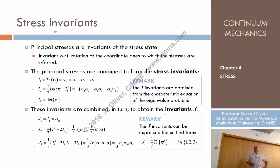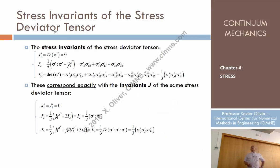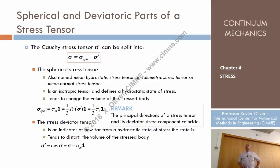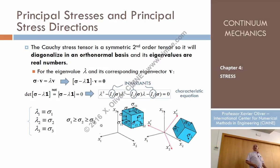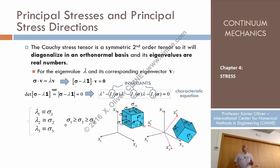Let me talk now a little bit about stress invariance. There should be some combinations of the stress components in different possible systems of coordinates, such that in spite of these components changing when we change the Cartesian system of coordinates, a certain combination should be constant regardless of the coordinate system. They are called invariants, and there are in principle three invariants.